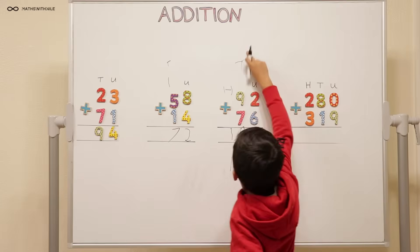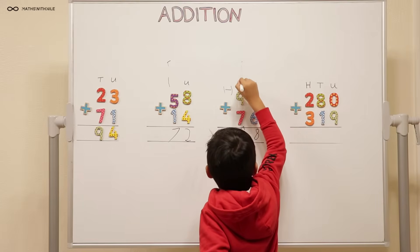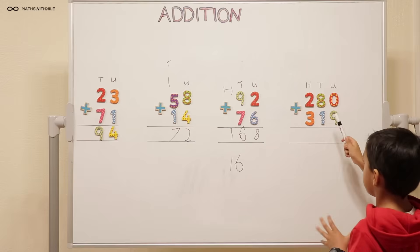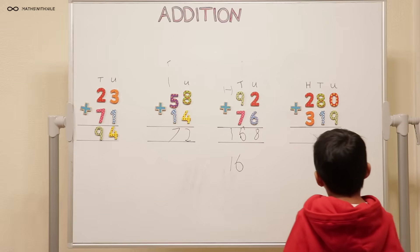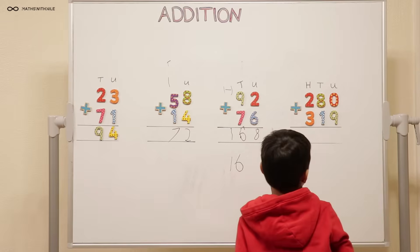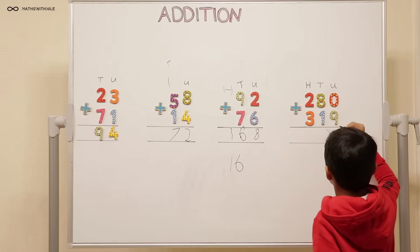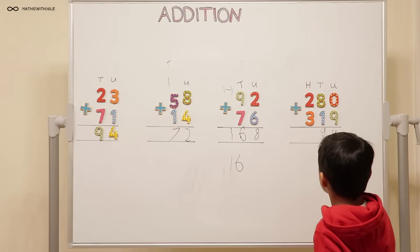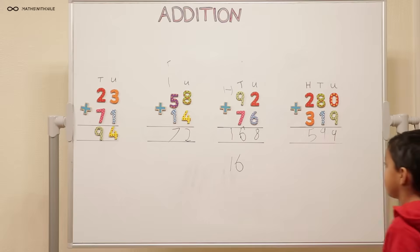So we have a hundred and sixty-eight. Very good. Let's try this one — two hundred and eighty plus three hundred and ninety. So what are you going to do? Zero plus nine equals nine. Eight plus one equals nine. Two plus three equals five.